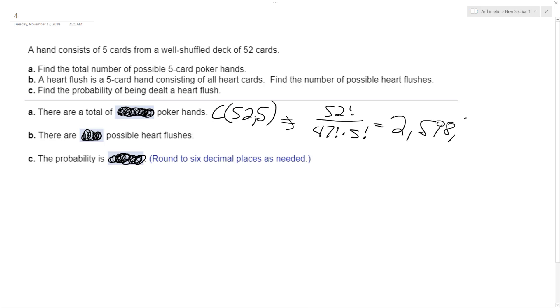All right, so how many possible heart flushes are there? That's a smaller number. There are 13 hearts and five possible hands, assuming you get a flush of hearts. That's equal to 13 factorial over 8 factorial times 5 factorial. And this ends up being equal to one thousand two hundred eighty-seven.